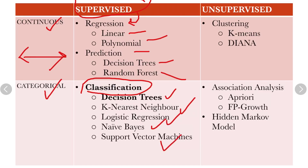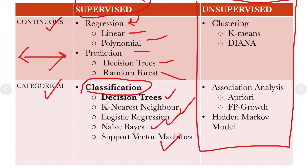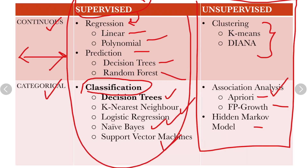For unsupervised learning with continuous data, we may use clustering techniques such as k-means or DIANA. For categorical data, we can use association analysis — for example, Apriori, FP-growth, and also the hidden Markov model. Unsupervised learning will be covered in the next topic. This topic, we are going to cover only supervised learning with classification techniques using decision trees.